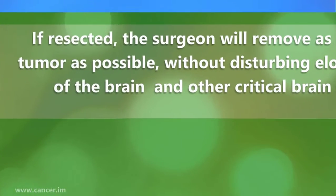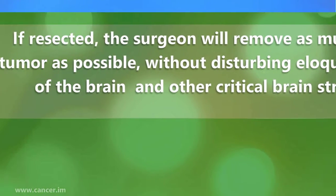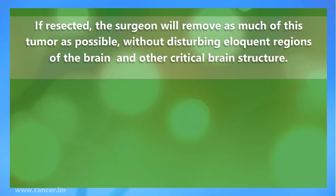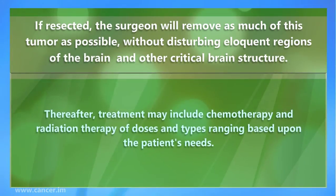If resected, the surgeon will remove as much of this tumor as possible without disturbing eloquent regions of the brain and other critical brain structures. Thereafter, all treatment may include chemotherapy and radiation therapy, of doses and types ranging based upon the patient's needs.